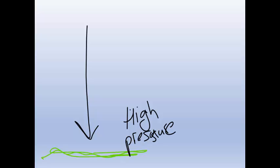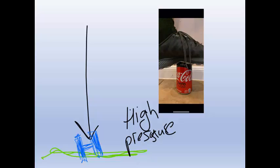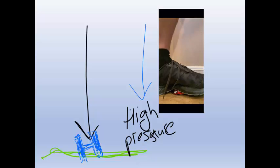The pressure of my foot is causing the can to crush — the same thing happens in the atmosphere. This spot where the air is coming down is experiencing high pressure. Think about putting your hand on a table and smacking it with a hammer — that's definitely pressure. So when the air is coming down, like my foot on this can, it's going to create high pressure. The opposite is also true: if the air is going up, then it would be low pressure.